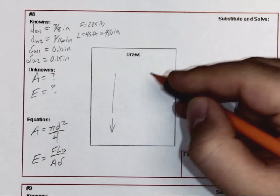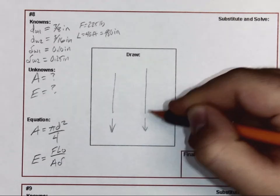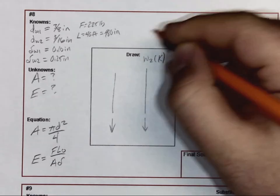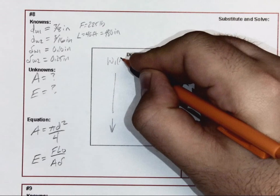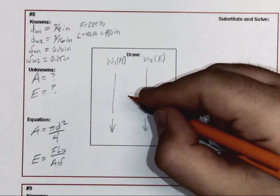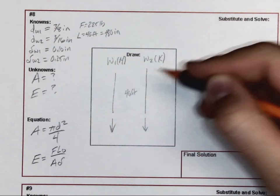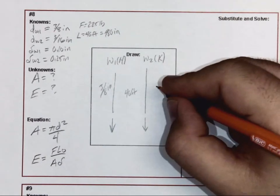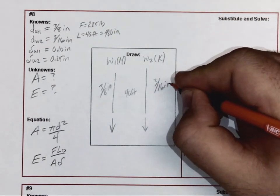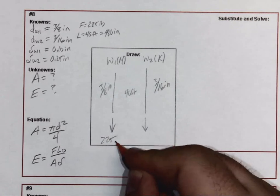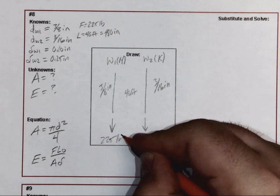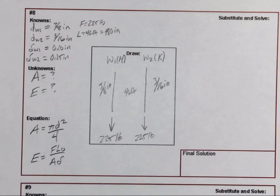So as far as drawing this, here's where we have two wires. Wire one, or wire two, is going to be wire K. Wire one is H. And they're both 40 feet long. This one's got a 3/8 inch diameter, this one's got 3/16, and they're both being stretched by 225 pounds of force. That's kind of our drawing.